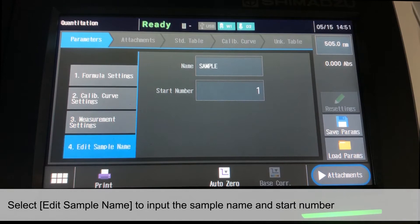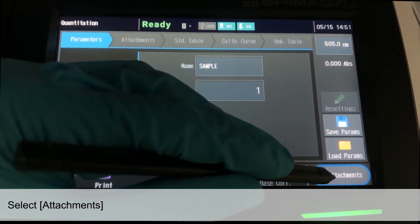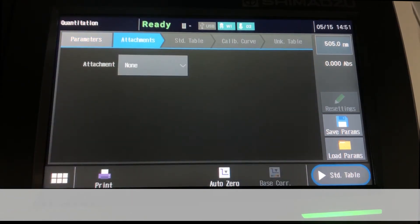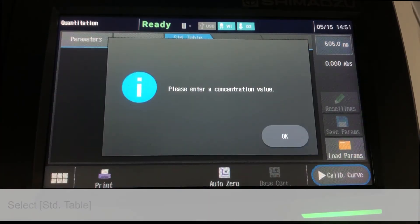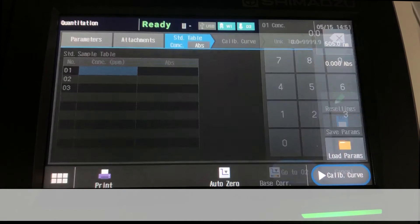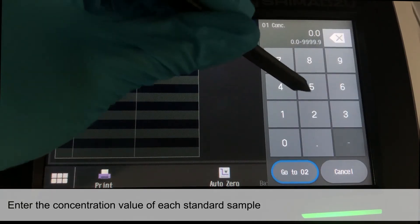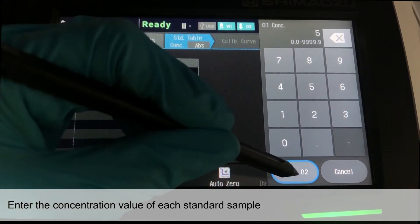Select Edit Sample Name tab to input the sample name and number if required. Now, we will select Attachment. Since we will not be using any attachment, we will proceed to Standard Table. Enter the concentration value of each Standard Sample to be measured.